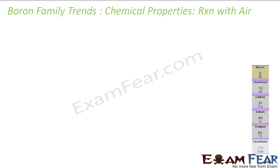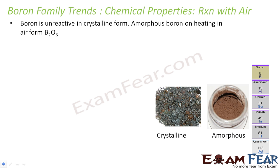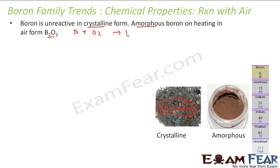Let's start with the reaction with air. Boron is unreactive in crystalline form, but in amorphous form, on heating, it forms B2O3. There are two forms of boron: amorphous and crystalline. The crystalline form is unreactive, but the amorphous form reacts on heating in air to give B2O3. The balanced reaction is: 4B + 3O2 → 2B2O3.